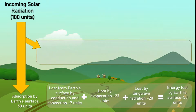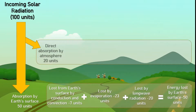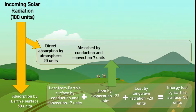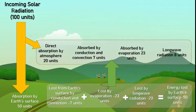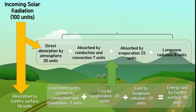Next, we will understand how energy is released from earth's atmosphere to space. In earth's atmosphere, we already have 20 units which were directly absorbed by the atmosphere from insolation. In addition, we also have energy transmitted by earth's surface: 7 units lost through conduction and convection, 23 units lost through evaporation, and 8 units out of 20 units lost by long wave radiation. So all these 58 units are emitted to space by the atmosphere.